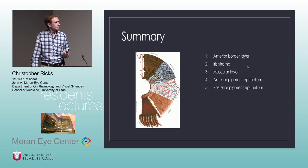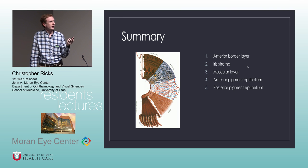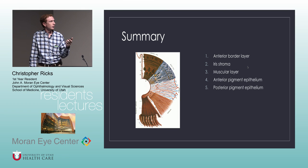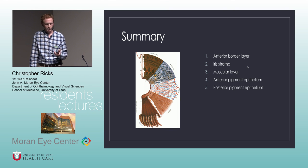In summary, there are five layers that are important to keep in mind when thinking about iris anatomy: the anterior border layer, the iris stroma, the muscles, and the anterior and posterior pigment epithelium.